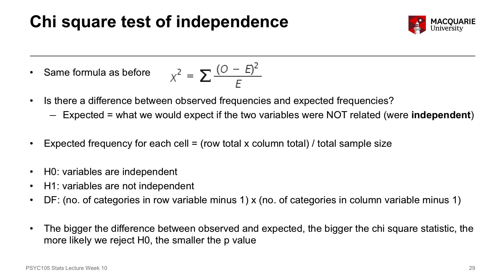Conceptually, the bigger the discrepancy between the observed values and the expected values, the bigger the actual chi-square test statistic is going to be, and therefore the more likely we reject the null hypothesis, and the smaller the p-value associated with our test statistic. That's the same principle as we were talking about with t-tests and also with the test of correlation. Generally speaking, the bigger your test statistic, the bigger the association between the two variables, the smaller your p-value, and the more likely we reject the null hypothesis.